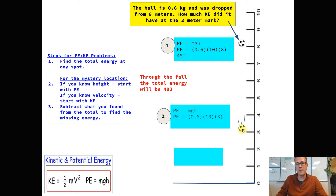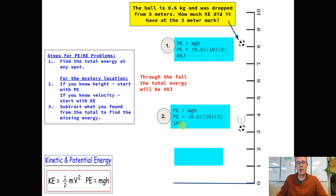We figure out the potential energy at the 3-meter mark: mass 0.6 times gravity 10 times height 3 gives 18 joules of potential energy at that spot. So it went from 48 down to 18 — that means we lost 30 joules along the way, and those 30 joules had to have turned into kinetic energy. Step 3: subtract what you found from the total and find that missing energy. At the 3-meter mark, 48 minus 18 means it had 30 joules of kinetic energy.